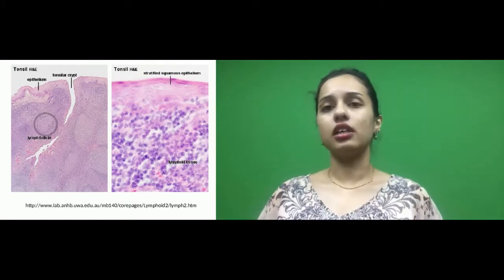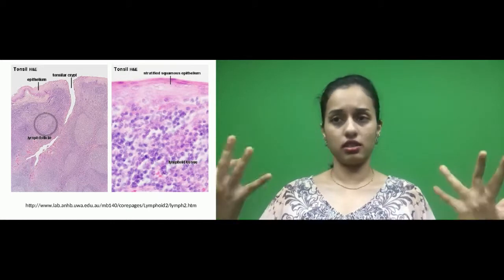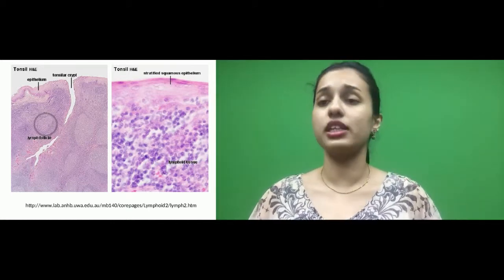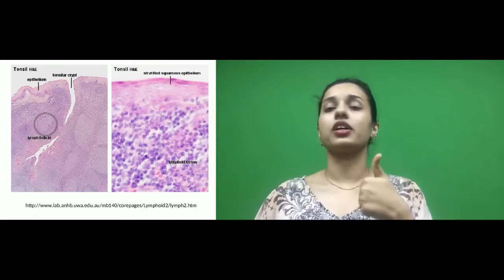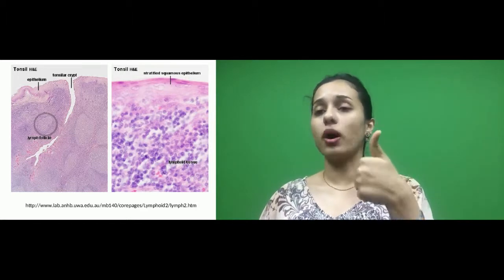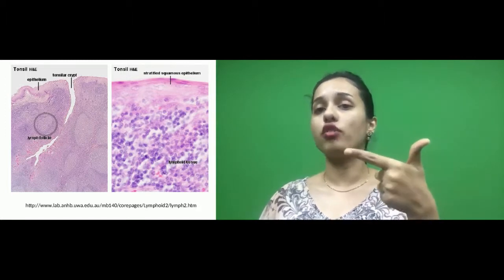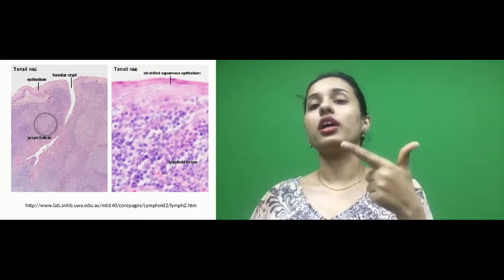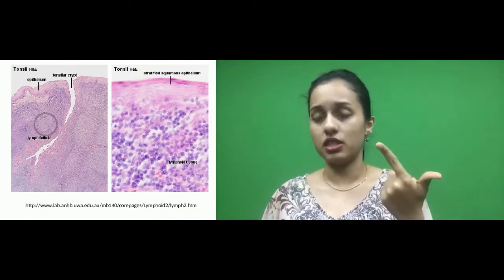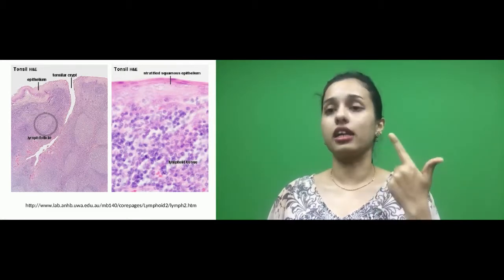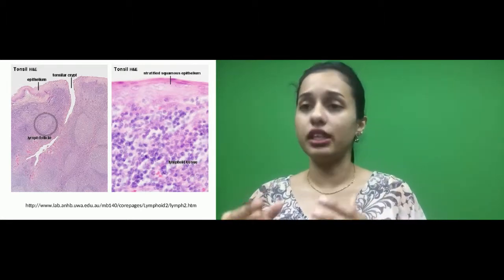In H&E staining you can see the main features of the tonsil. The first identifying feature is the epithelium — stratified squamous epithelium. The second identifying feature is the presence of invaginations called epithelial invaginations, or crypts — labeled as tonsillar crypts. These are invaginations densely infiltrated with lymphatic tissue.